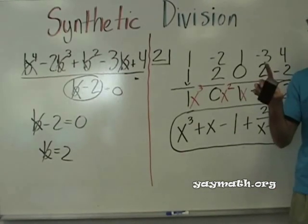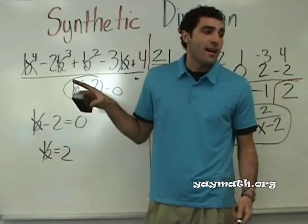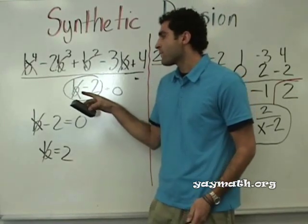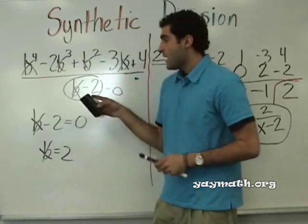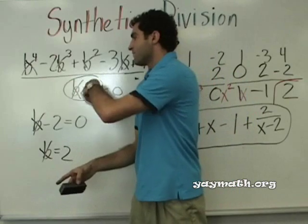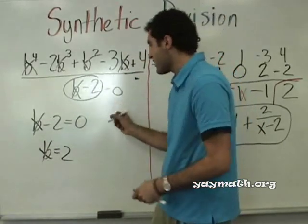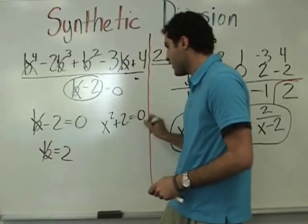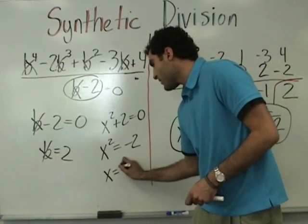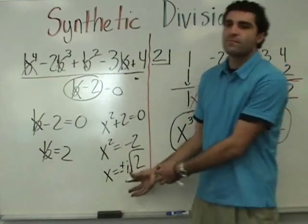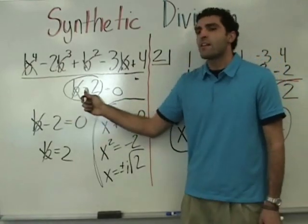Can you do that with any of those problems? Not every one. You want to do long division more if the bottom has something like x squared plus 2. If there's a lot of stuff downstairs, it's difficult to set it to 0. If this was x squared plus 2 equals 0, you can't really do it with synthetic because then x squared equals negative 2, x equals plus or minus i root 2. So long division is better when the denominator has something like that. Synthetic is good for easy numbers downstairs.